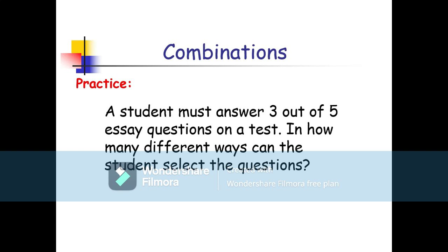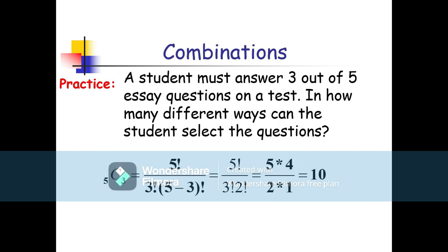A student must answer 3 out of 5 essay questions on a test. In how many different ways can the student select the questions? We use 5C3 = 5! / (3! × (5−3)!) = 5! / (3! × 2!). Expanding: (5×4×3×2×1) / ((3×2×1) × (2×1)). The 3! cancels and we divide 5×4 by 2 to get 10. The required answer is 10.